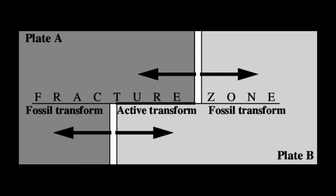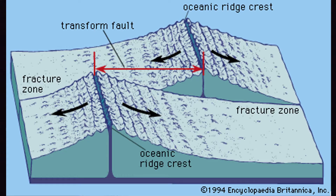Continuing outward from most transform faults is an oceanic fracture zone, which is a step in the elevation of the seafloor. A fracture zone is a former transform fault that now has no relative motion across it — it no longer separates two plates but instead is within a single plate.